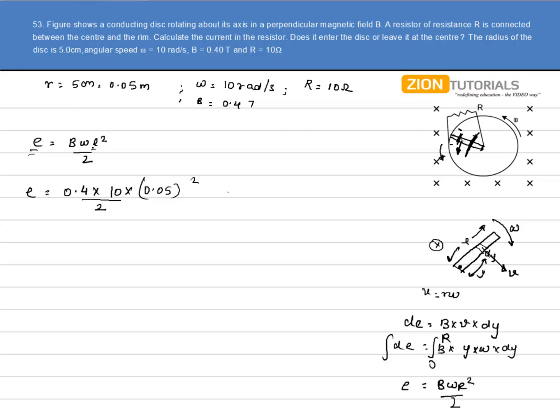So my battery is like this. Clearly current is going in this direction. Current is given by Ohm's law, that is V by R.